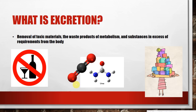So what is excretion? Well, excretion is the removal of toxic materials, or the waste products of metabolism, or the substances in excess of requirements from the body. If they ever ask a question about the definition of excretion, you'll probably have to just memorize this word for word. It's important for you to understand that excretion is not just about removing poisonous stuff — it's also about removing what might potentially be good for us, but we have too much of.